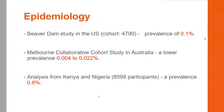Regarding prevalence, the Beaver Dam study in the U.S. included 4,790 patients and found a prevalence of 0.1%. The Melbourne Collaborative Cohort Study found prevalence of 0.004 to 0.022%. Analysis from Kenya and Nigeria found a prevalence of 0.6%. These prevalence figures were likely underestimates because only color fundus images were analyzed, which was the only modality available at that time.